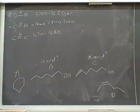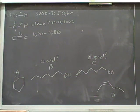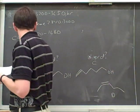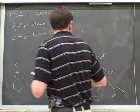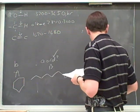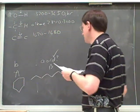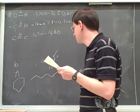So then D is C, because it's 1665. And then B, A — does it go B, D, A, C? Sounds right.